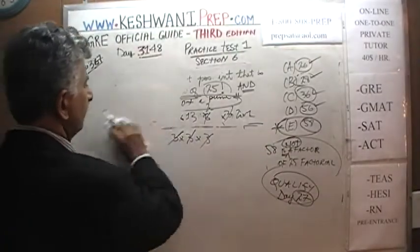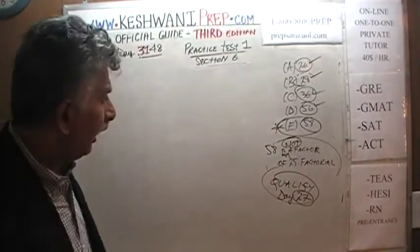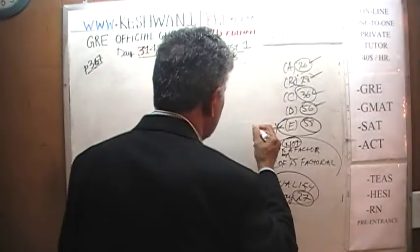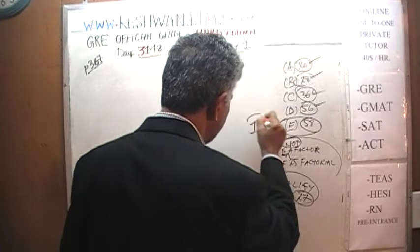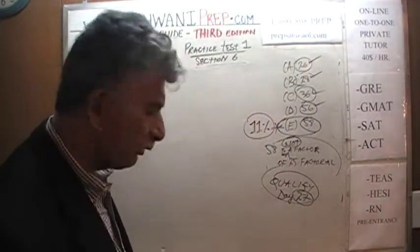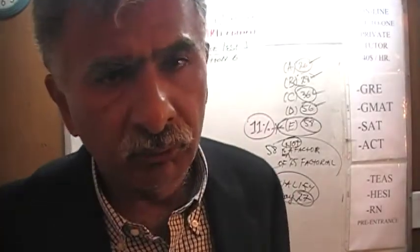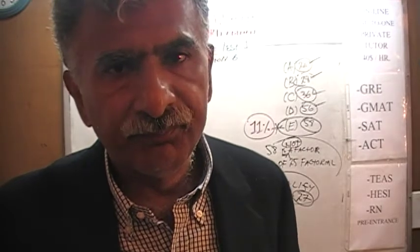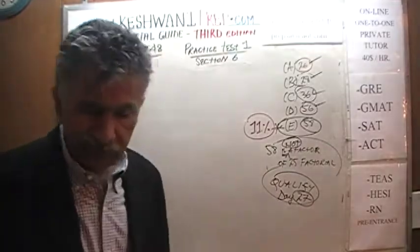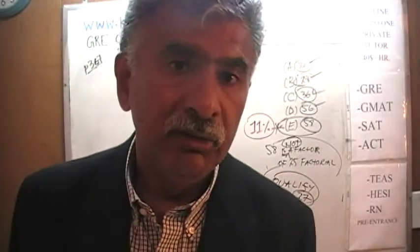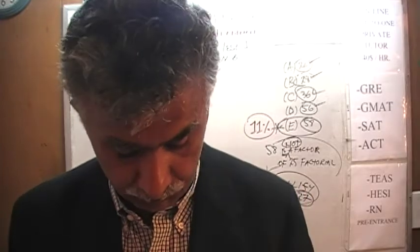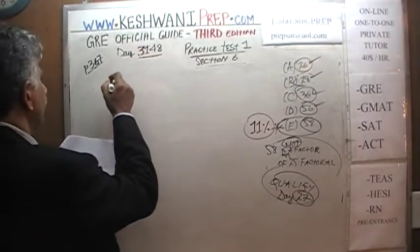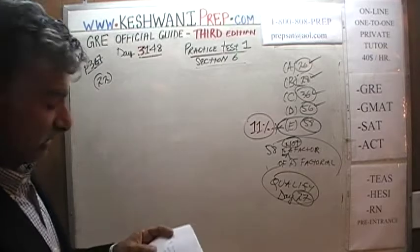Enough of this — let's move on to number 22. The answer to problem 21 was E. Only 11% of people got this question right when it appeared on the real exam, which is very unusual. Even hard questions typically have a percentile of about 20 or so. Once you understand the concept, it wasn't actually that bad, was it?